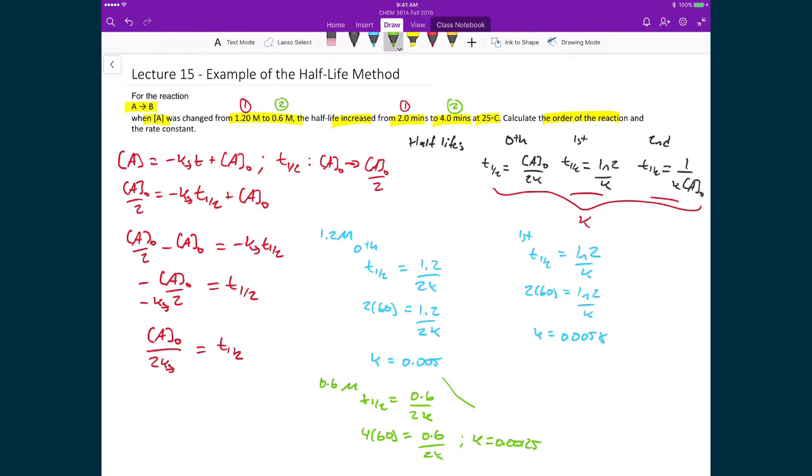I do it for the 0.6 molar. I have T1/2 equal to natural logarithm of 2 over K. I'm going to write in the 4 times 60, and that's equal to natural log of 2 over K. In this case my K for my first order case is going to be equal to 0.0029. Again, these two numbers are not the same, and the K needs to be the same no matter what the initial conditions are. So this is probably not a first order reaction.